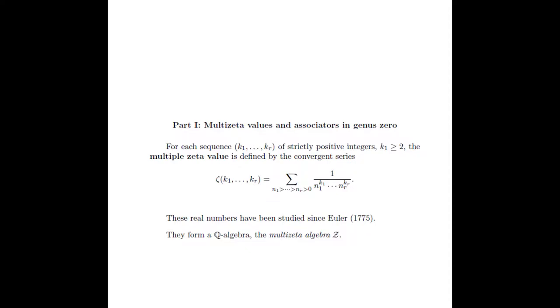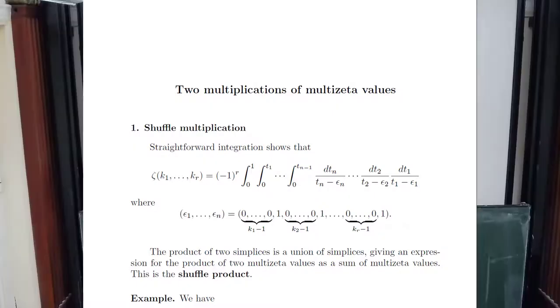I'm going to start talking about multiple zeta values. Multiple zeta values are real numbers given by these power series—these infinite sums—which converge if the biggest index is large enough. They've been studied for a long time; they have many algebraic relations between them that are much studied, very interesting and beautiful. In particular, you can multiply them. If you multiply them, you get a sum, which I'm going to show you now. The very first few slides are very old, well-known material.